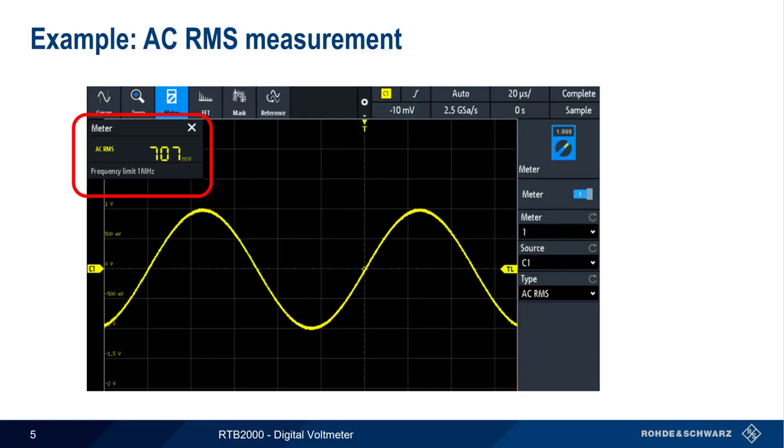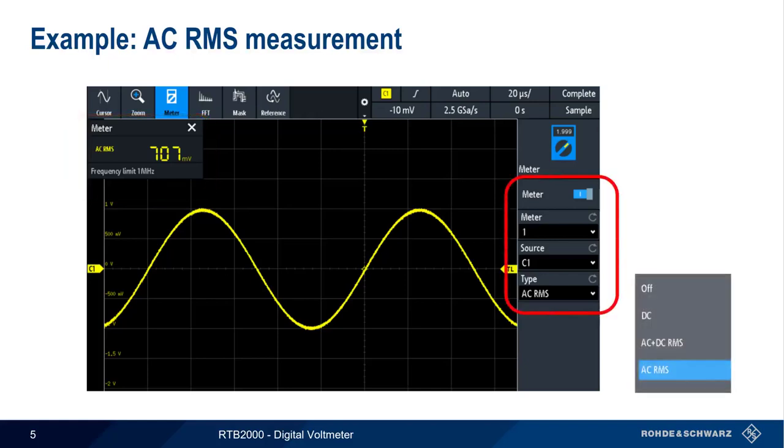The DVM appears as a small, movable window in the RTB display. Tapping in the center of this window brings up the measurement settings. This menu is where we can configure the type of measurement that we want to make: DC, AC RMS, or combined AC and DC RMS. In this example, the meter is making an AC RMS measurement of a 2-volt peak-to-peak sinusoid on channel 1, and we see the expected RMS value of 0.707 volts shown in the DVM window.